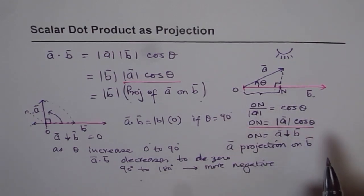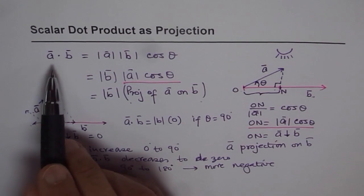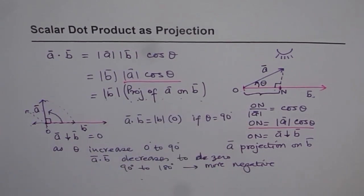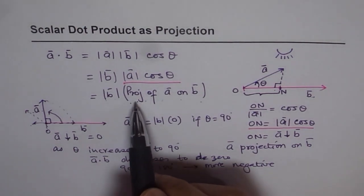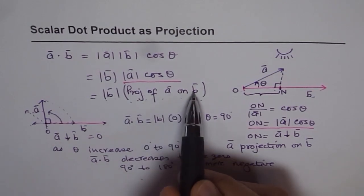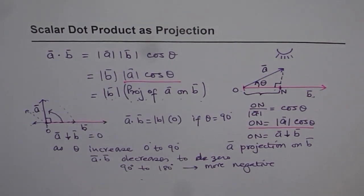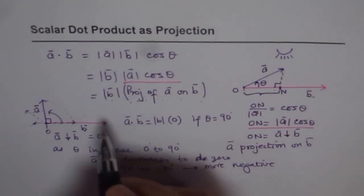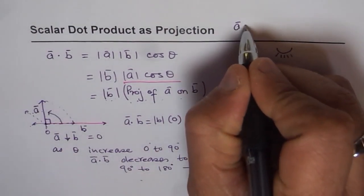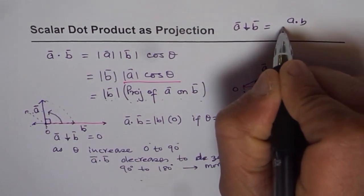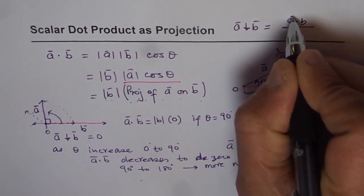So the dot product can be seen as: A dot B equals magnitude of B times projection of A on B. That is the relation between the two. And from here, if you want to find the projection of A on B, it is A dot B divided by the magnitude of B. So projection of A on B equals A dot B divided by magnitude of B.